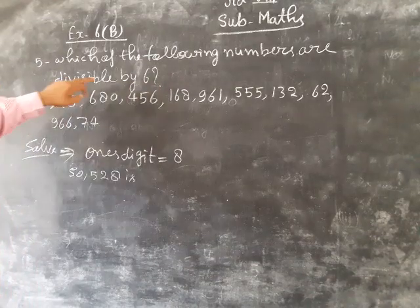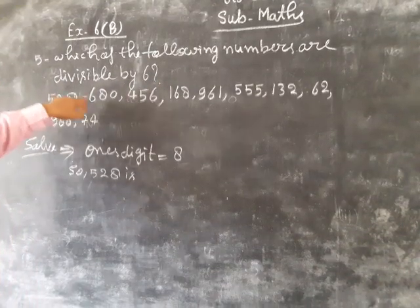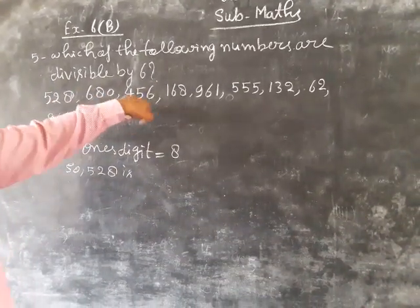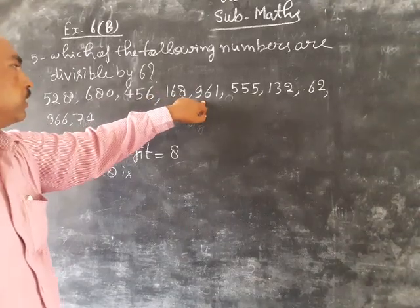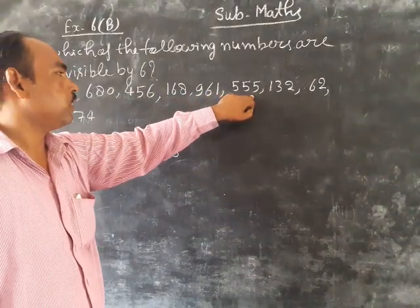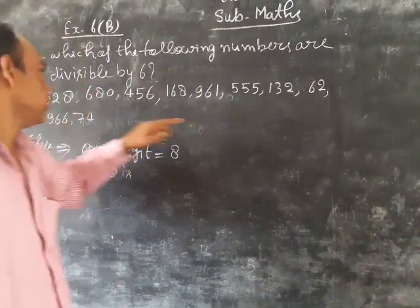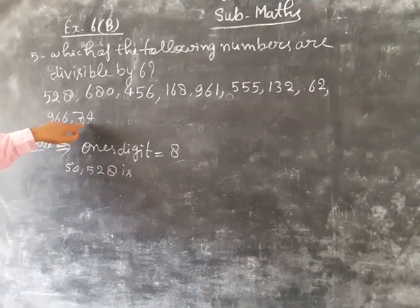Which of the following numbers are divisible by 6? 528, 680, 456, 168, 961, 525, 152, 62, 966, 74.